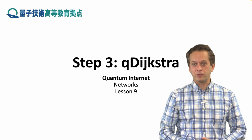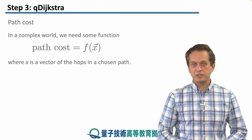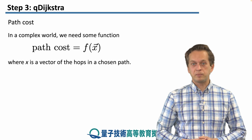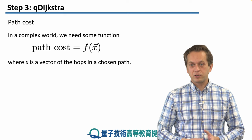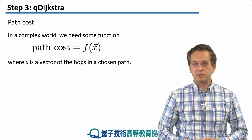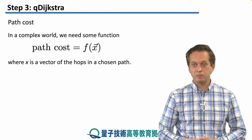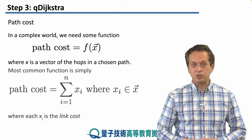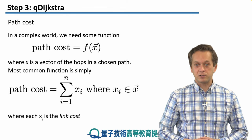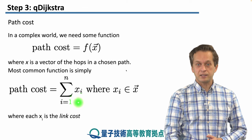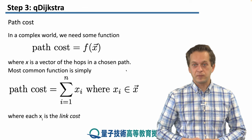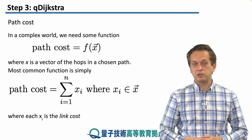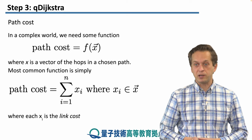Step 3: Quantum Dijkstra. In order to route a network we need a suitable cost function. In a complex world we cannot use something very simple, just the sum of how many hops we are doing, because each hop might have a different link cost associated with it. What makes sense is to define a path cost as the sum of xi's, where xi is the link cost. If you figure out how much each link costs, then you can find out the cost for the entire path and use that for your routing algorithm.